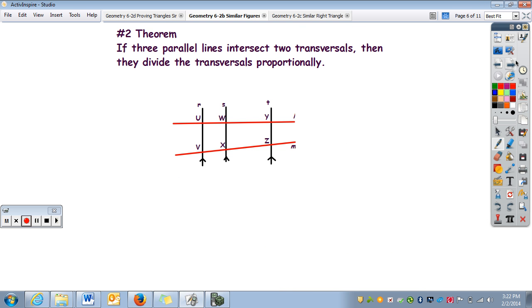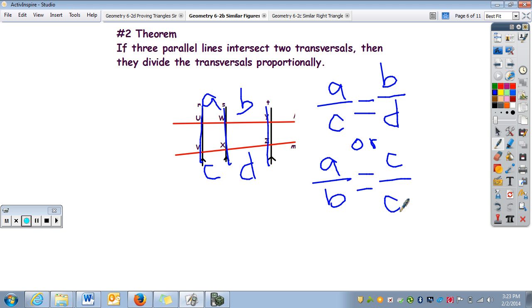Theorem number two is kind of like theorem number one, where we have three parallel lines. In this case, they are divided up proportionally. A, B, C, D. And, again, the parts go together. A over C is proportioned to B over D. Or, I could have went A over B equals C over D.